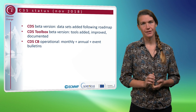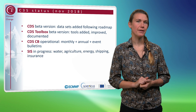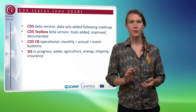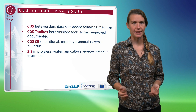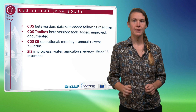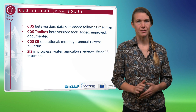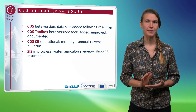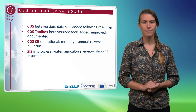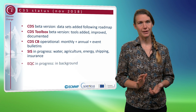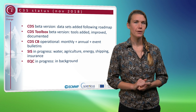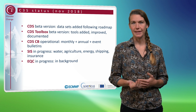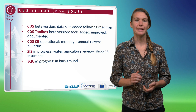For the sectoral information systems, we have a number of proof of concepts, for example for the water, agriculture, and energy sectors. There's a roadmap to make these operational, and around the end of 2018 the first ones will become operational. Evaluation and quality control, which gives for example information on uncertainty, is something in the background that is in progress.